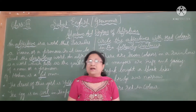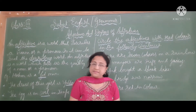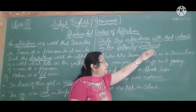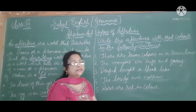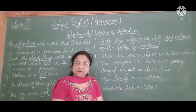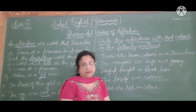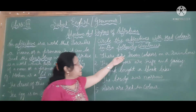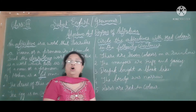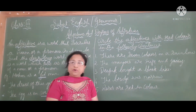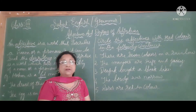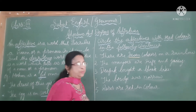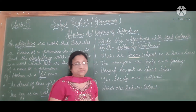Let us do a small exercise. Circle the adjectives with red color in the following sentences. Let us take the first sentence: there are seven colors in a rainbow. How many colors are there in a rainbow? There are seven colors. Seven is an adjective here — it is telling more about the colors.